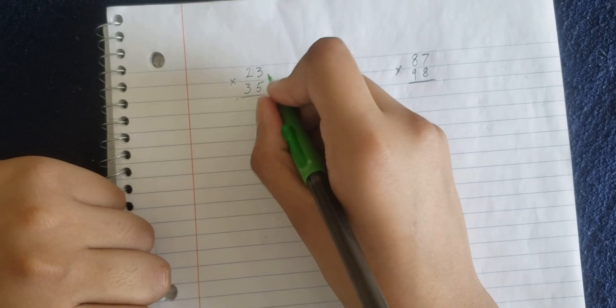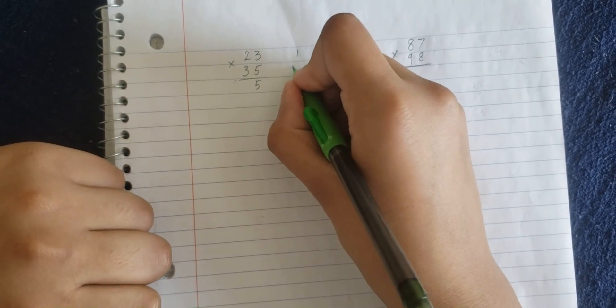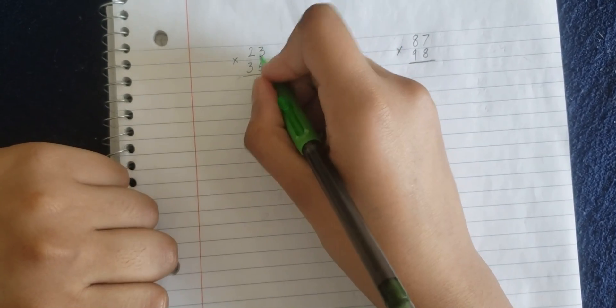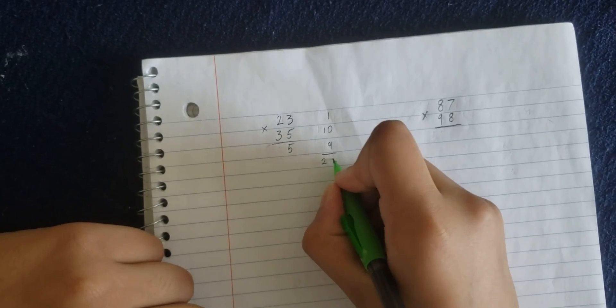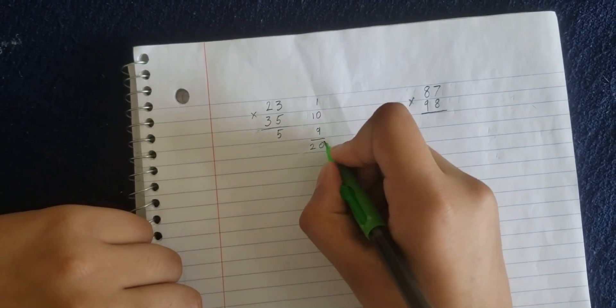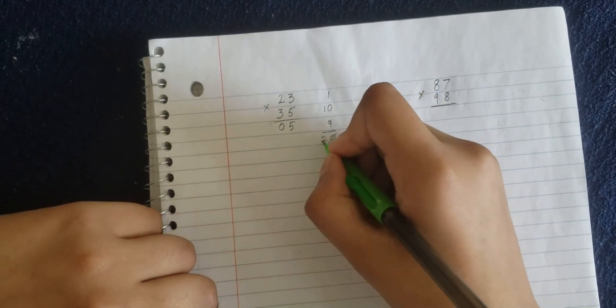Now you cross multiply these. Two times five is 10, and three times three is 9. Now you add all these up, 20, and now you can cancel this zero and put it here, and you can keep the two there.